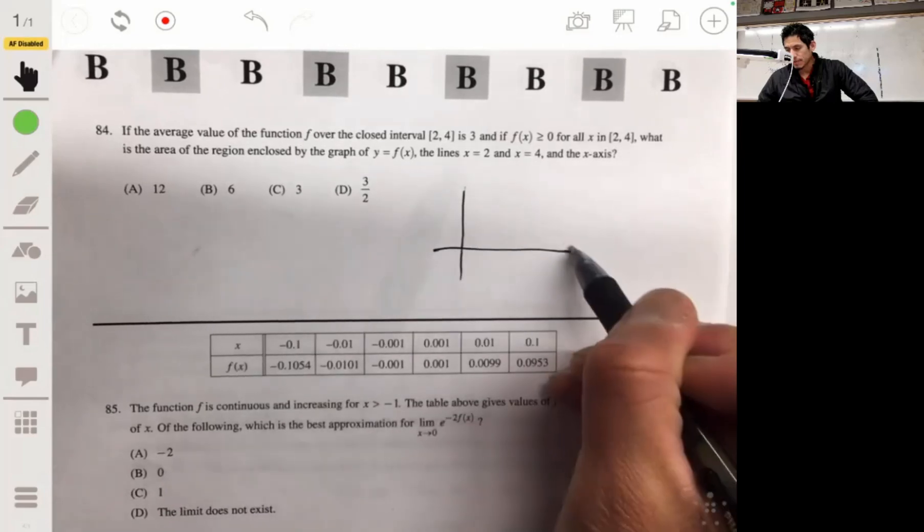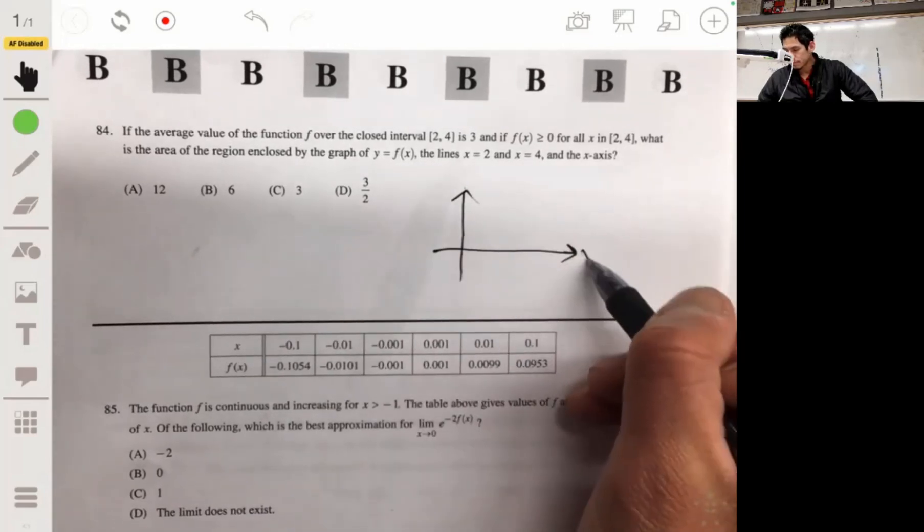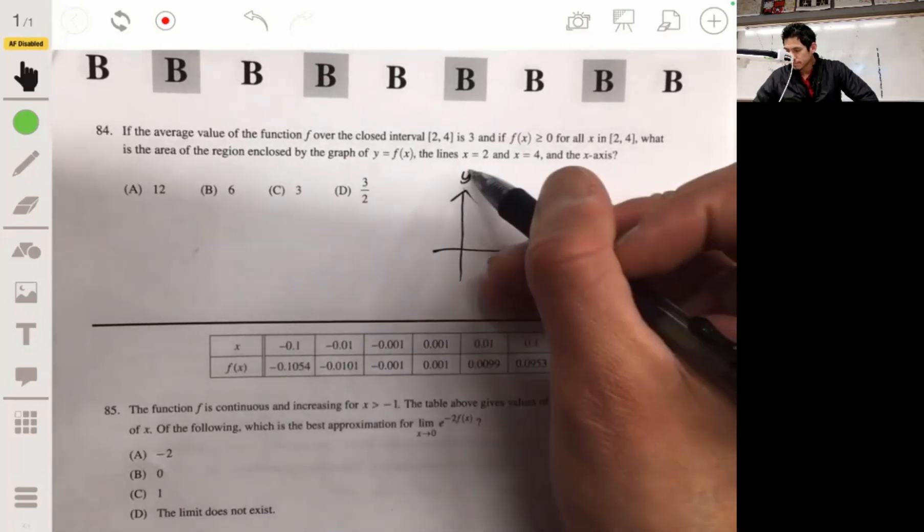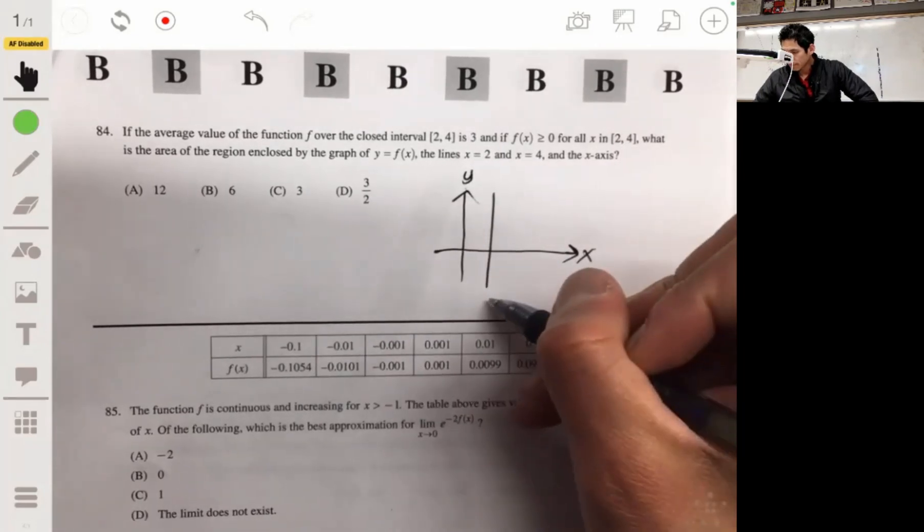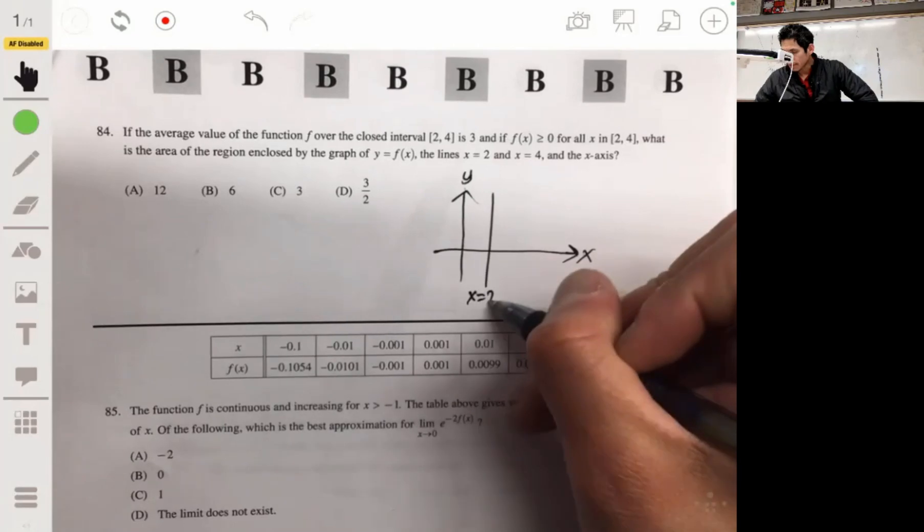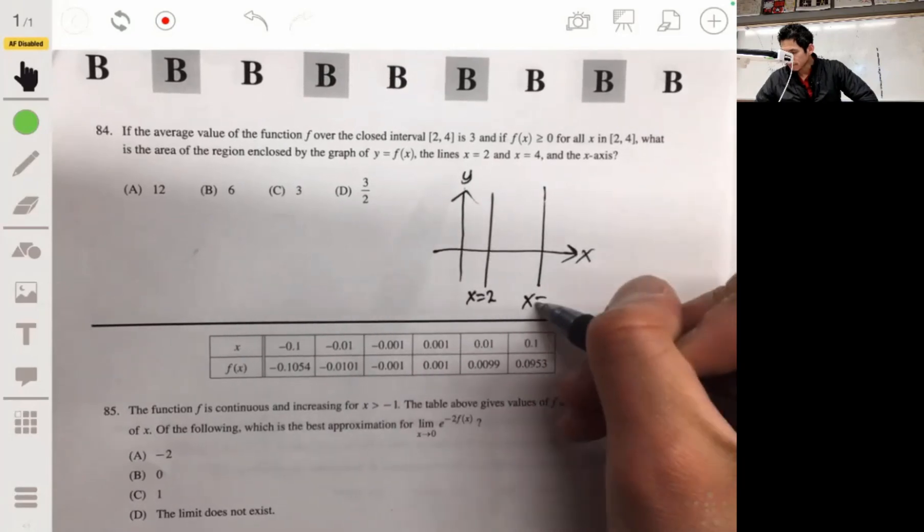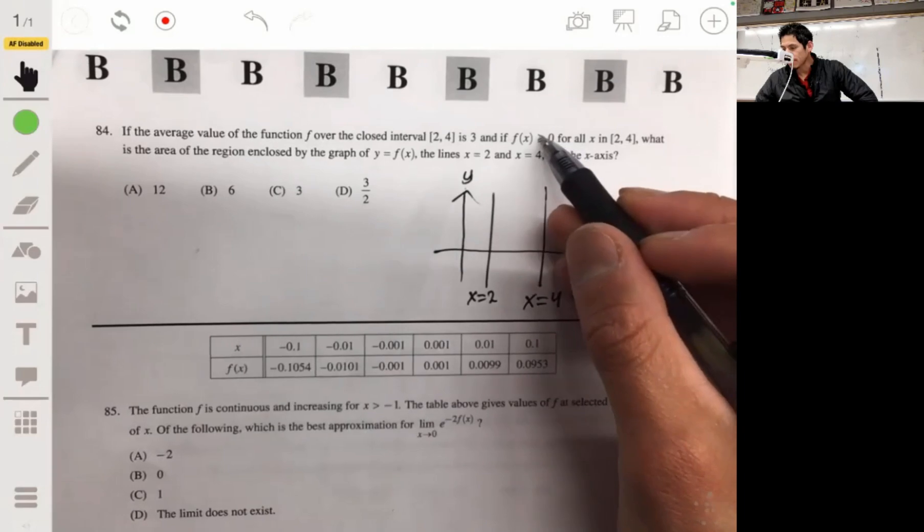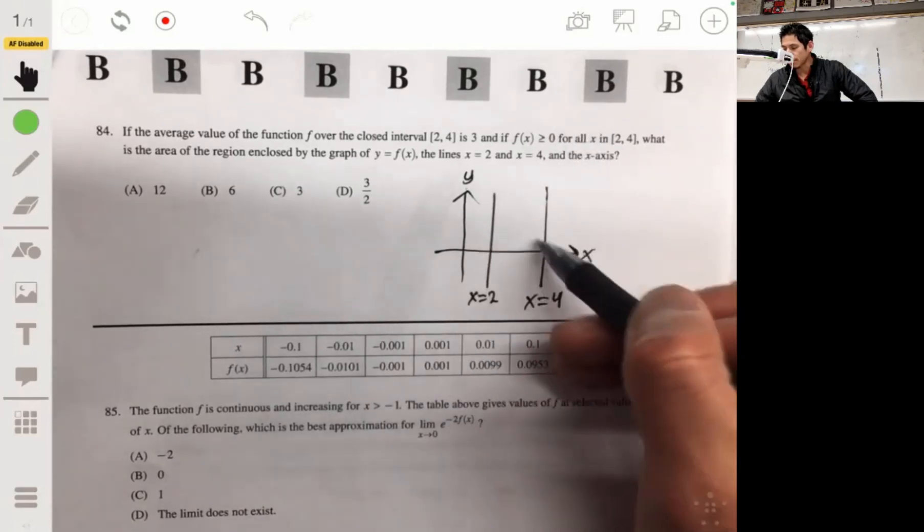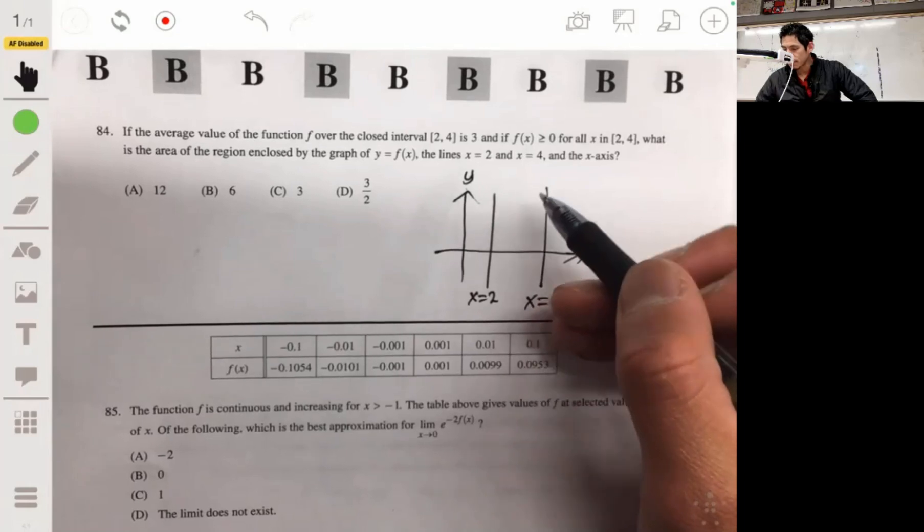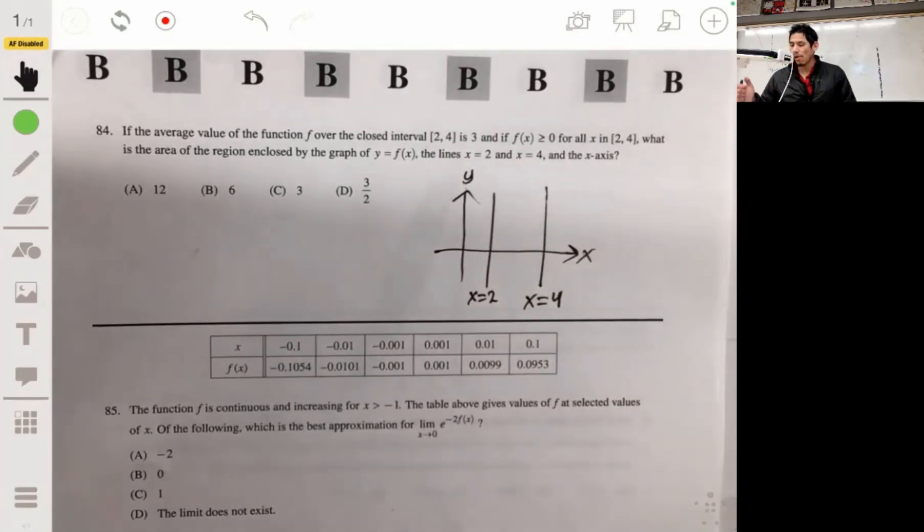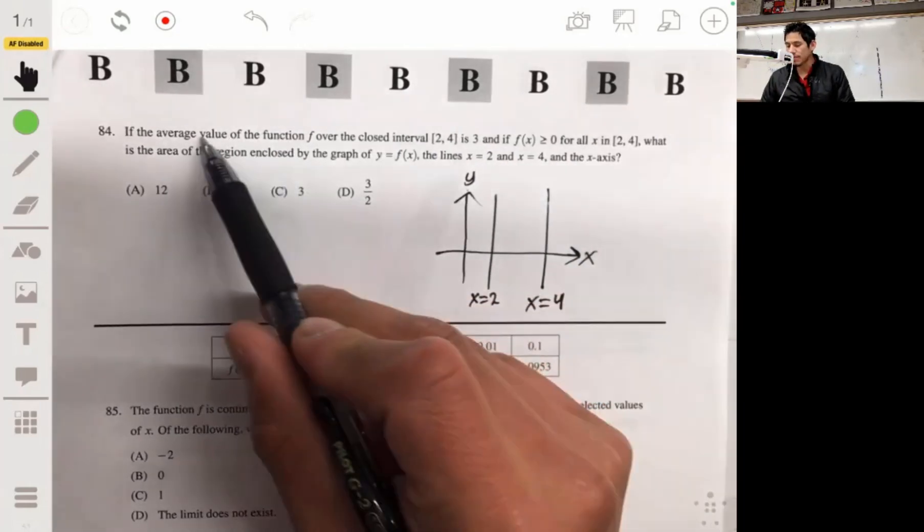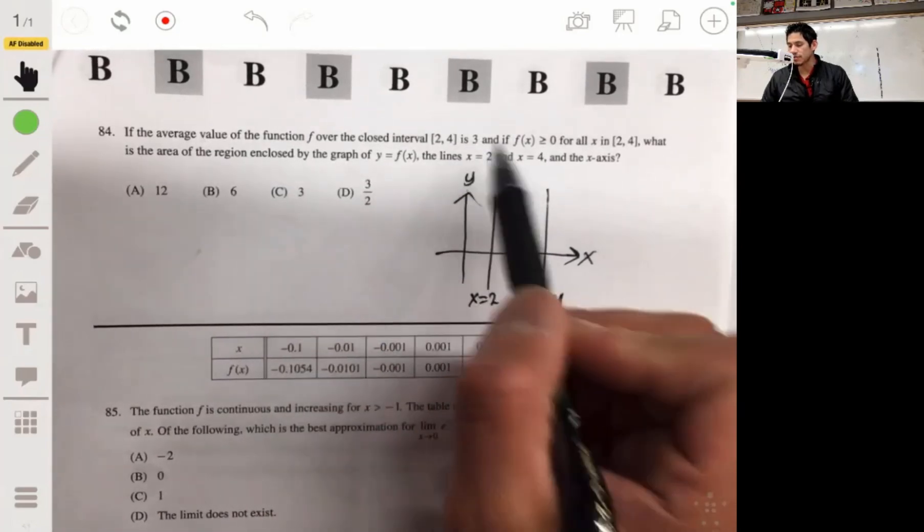So it's bounded by the x-axis and the lines x equals 2 and x equals 4. We're told f(x) is greater than or equal to 0, so it's going to be above the x-axis and continuous. We're given the average value, the average value is 3.